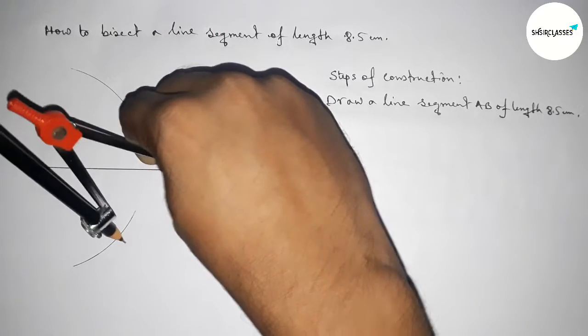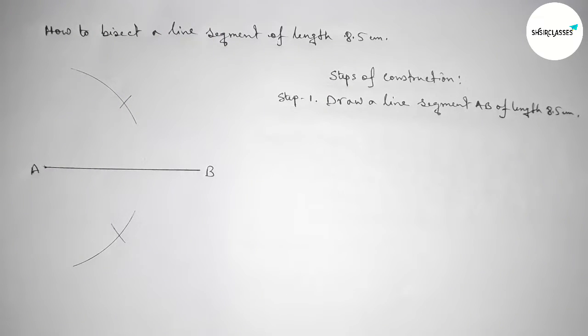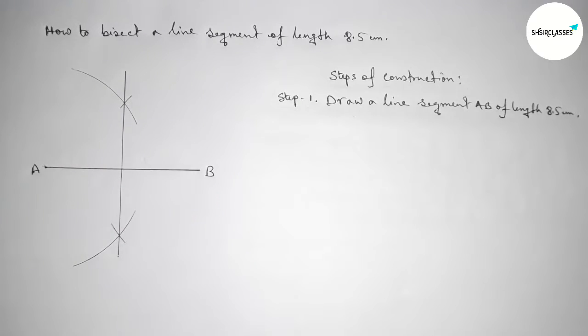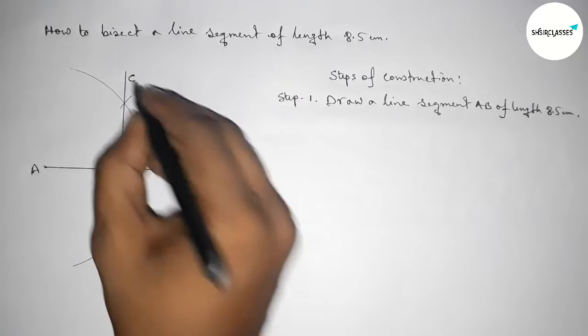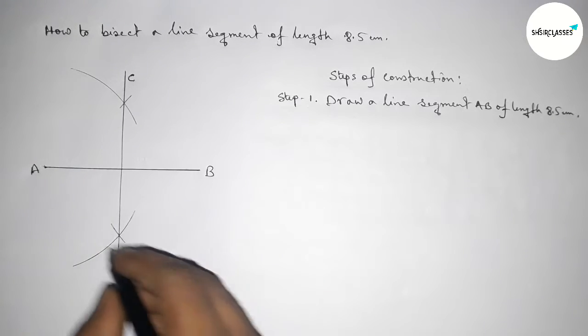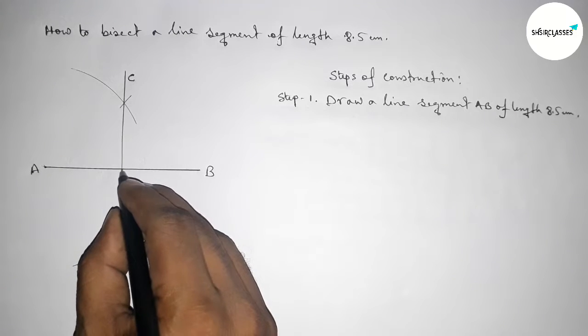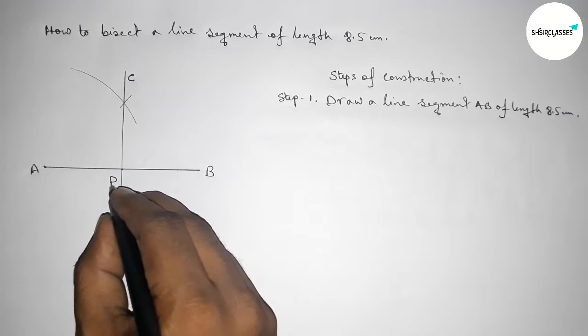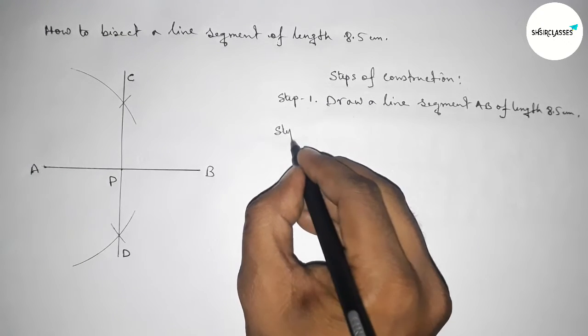So now joining this line. Taking point here C and D, so the line CD bisects the line AB here at the point P. So step number two: